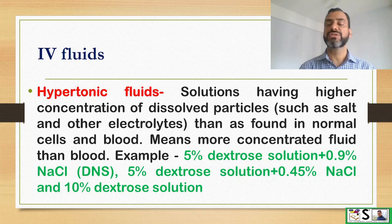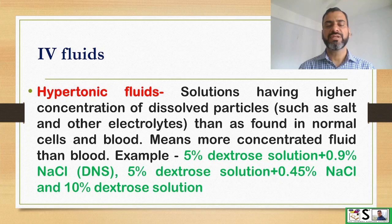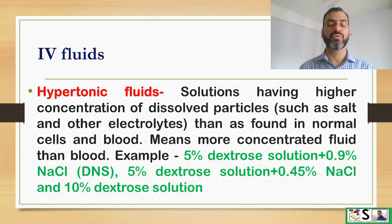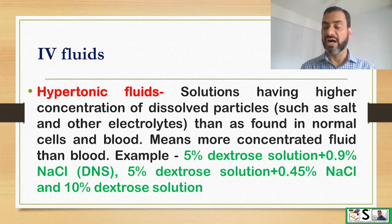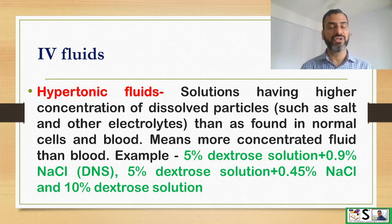Hypertonic solution: the solution having a higher concentration of dissolved particles such as salt and other electrolytes than found in the normal cell or blood — meaning it is more concentrated than the blood. Examples are DNS (5% dextrose plus normal saline), 5% dextrose plus half saline (0.45% saline), or 10% dextrose solution. These are the main solutions which we use for IV infusion.